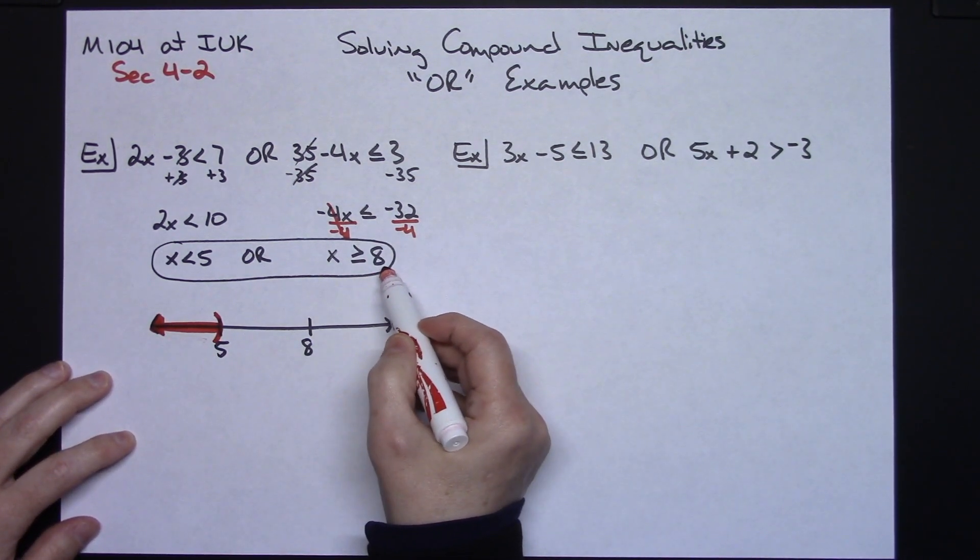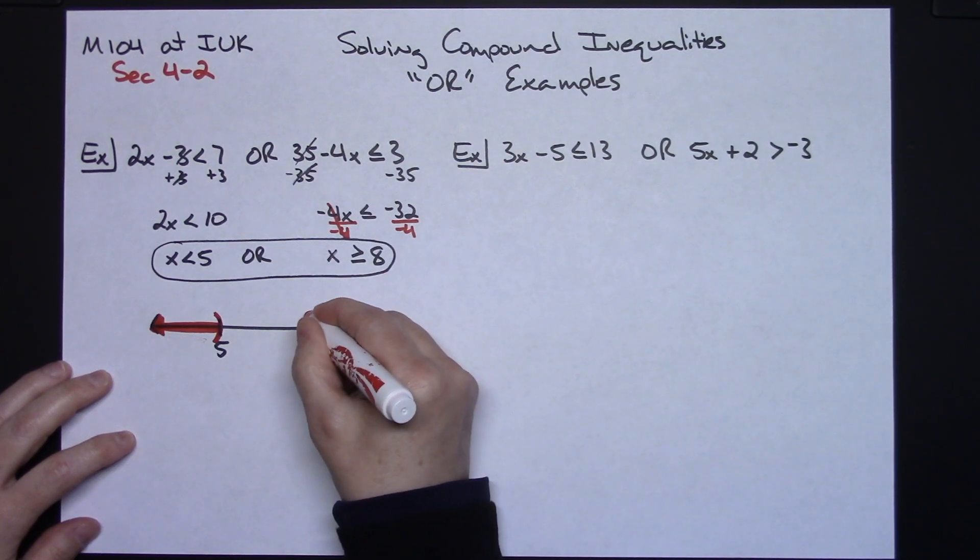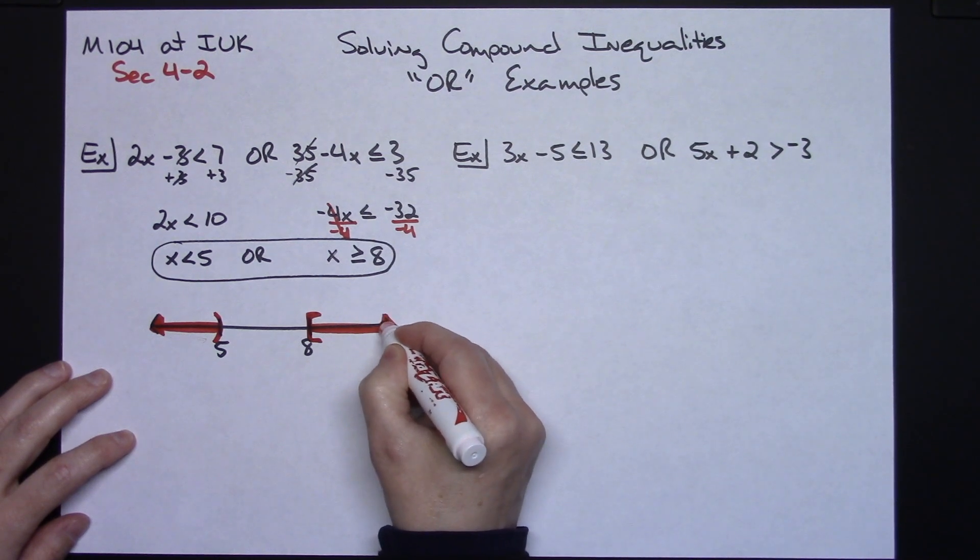Now this says x is greater than or equal to 8. Well, those would be these numbers over here. The equal to part says that I'm going to include 8 in my answer. So I'm going to have a square bracket there and shaded this way.